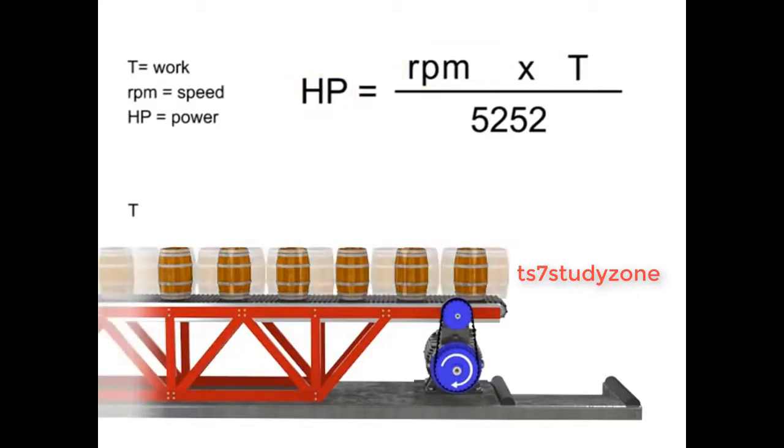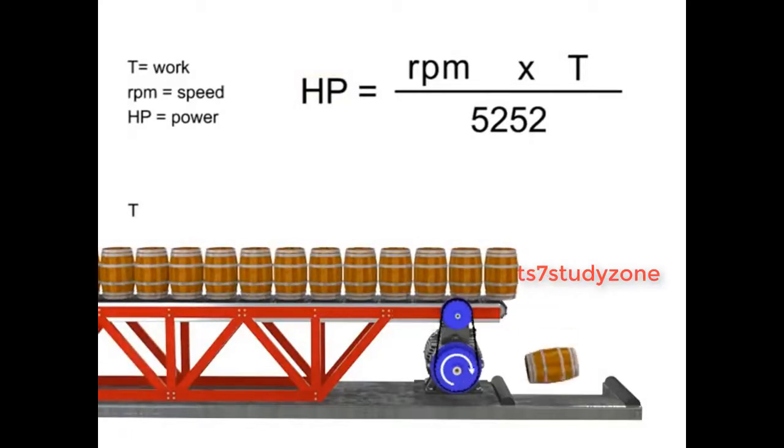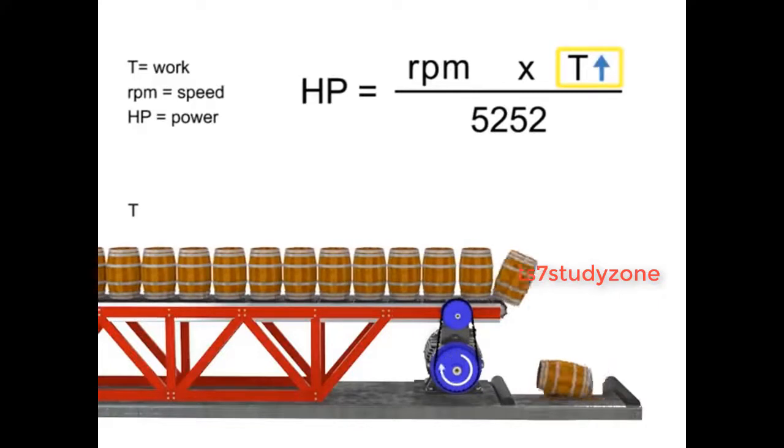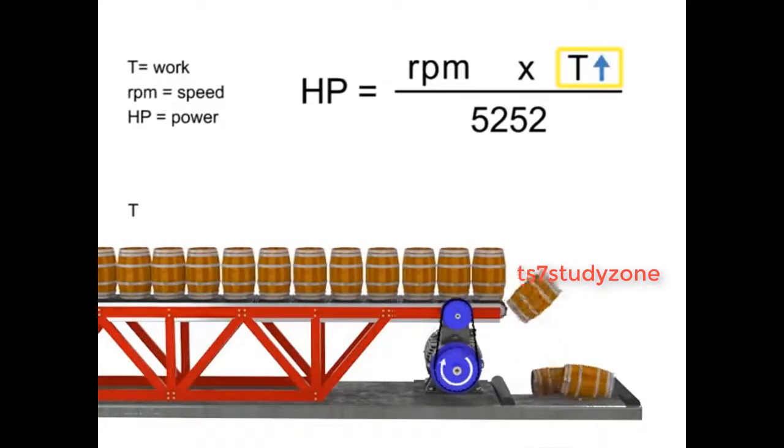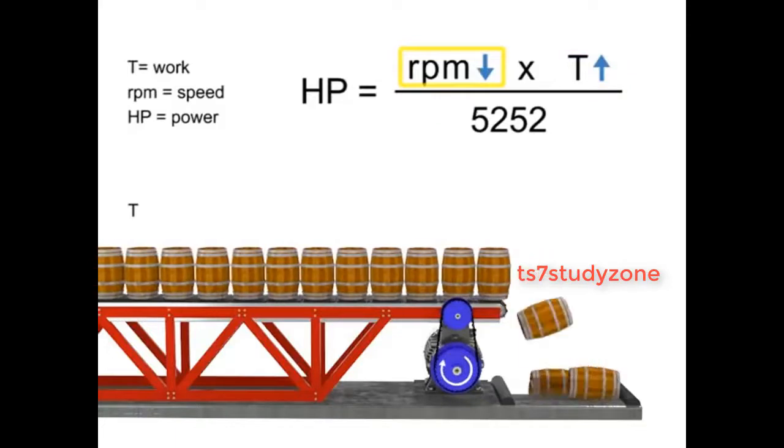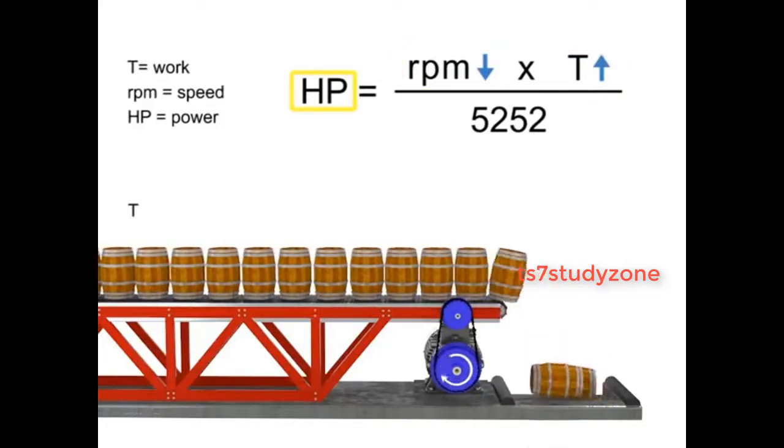Let's say we want the horsepower of our motor to remain constant, but wish to increase the torque. If torque increases, the speed of the conveyor decreases so that the horsepower required of the motor remains constant. Similarly, the opposite is true.